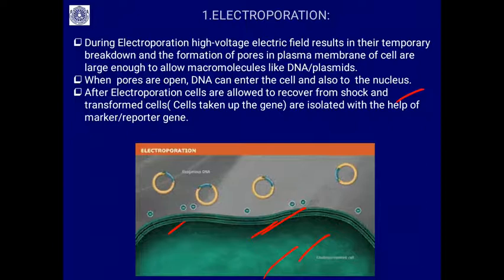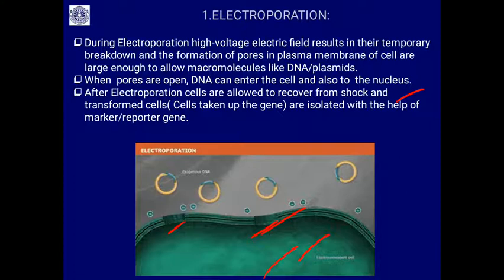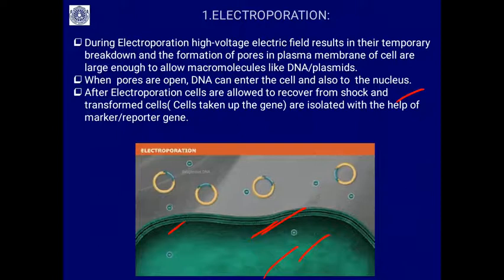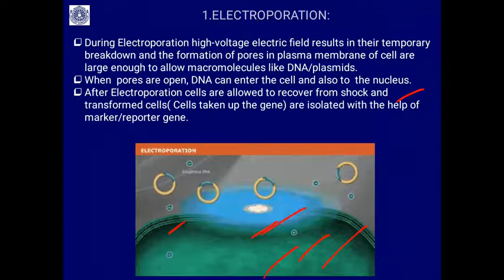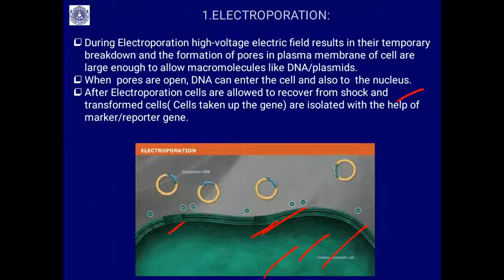Transformed cells can be selected with the help of a marker like the ampicillin resistant gene, tetracycline resistant gene, or lacZ. Using marker or reporter genes, we can select the bacterial colonies carrying our gene of interest. Remember, gene transfer is not 100 percent — out of 100 cells, only 10 to 20 cells receive our gene of interest. The rest of the cells have not undergone transformation and have to be identified and selected out.